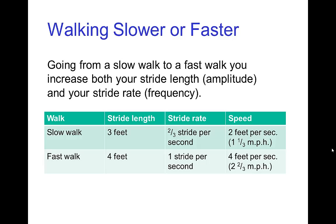For walking, let's say you are walking slowly with a stride length — that's the amplitude — of three feet, and you are taking two strides every three seconds. In that case, you are traveling at a speed of two feet per second, about one and a third miles per hour. On the other hand, a faster walk with a stride length of four feet and a stride rate of one stride per second gives you a speed of four feet per second — twice that of the slow walk.